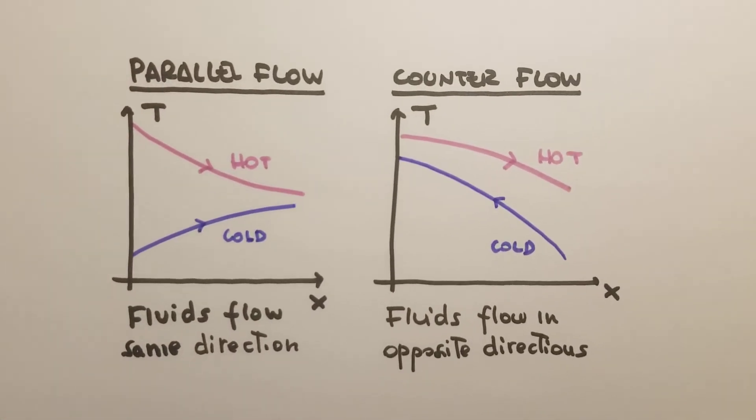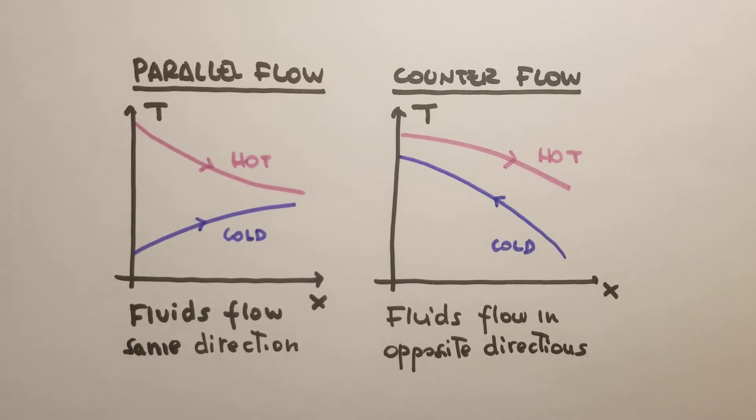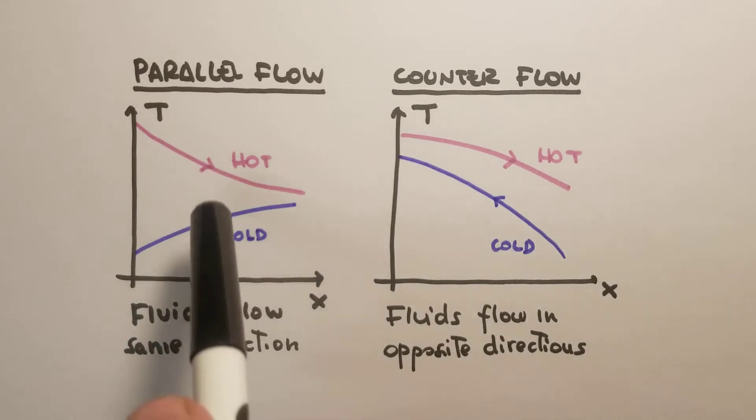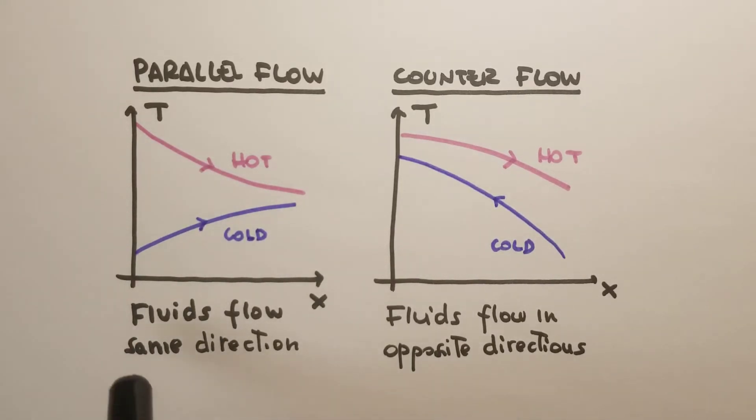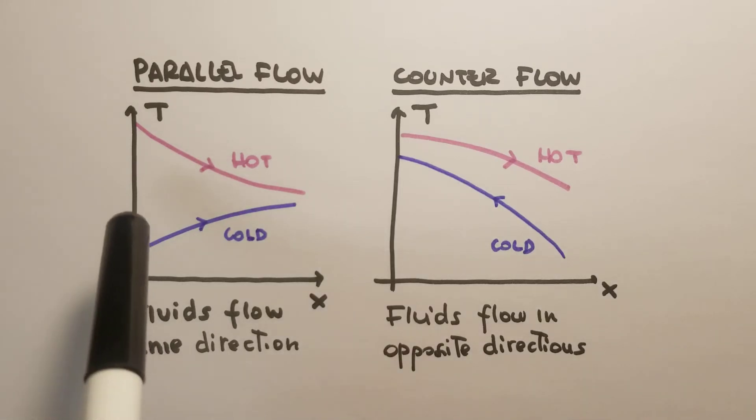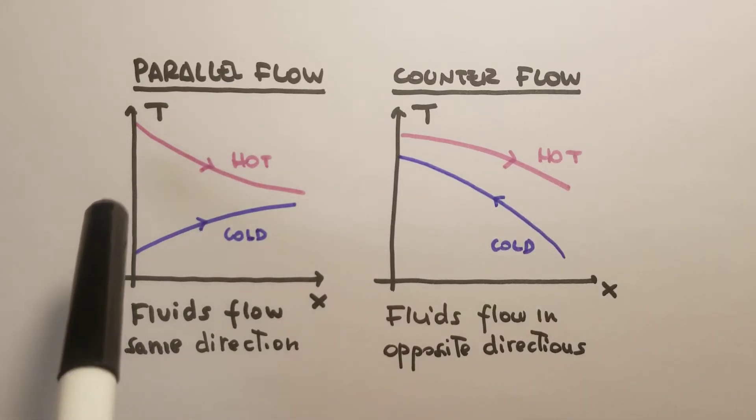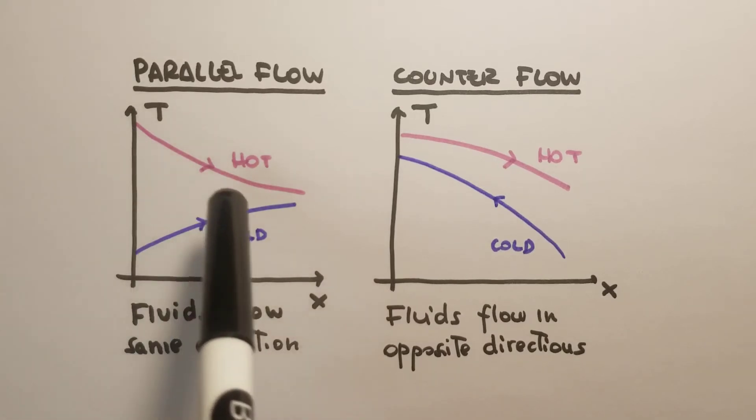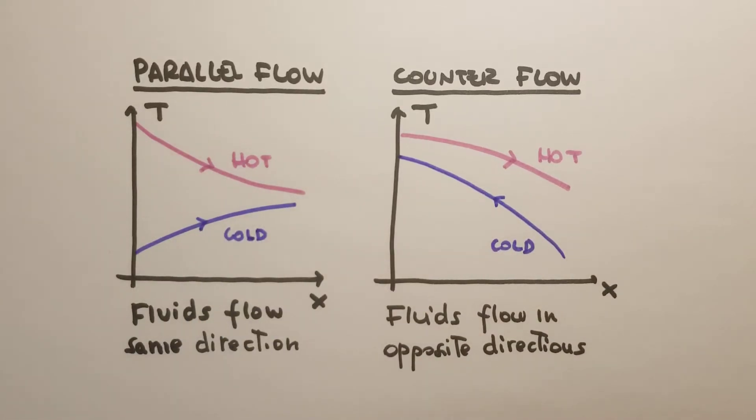There are many different configurations that can be considered. There's a parallel flow configuration where the hot fluid and the cold fluid exchange heat. The fluids flow in the same direction. The hot fluid experiences a drop in temperature as indicated in the figure, and the cold fluid instead increases the temperature.